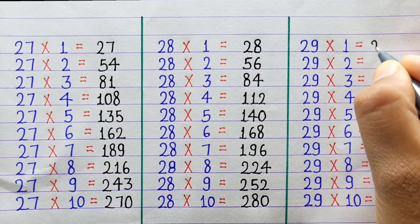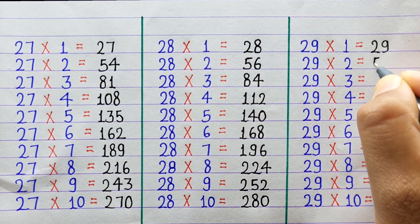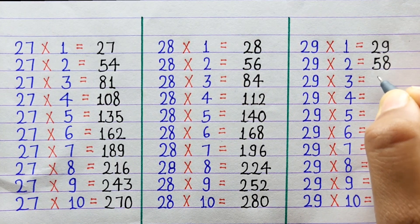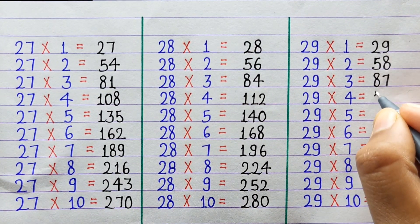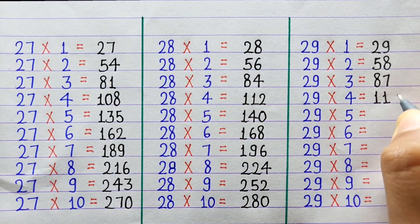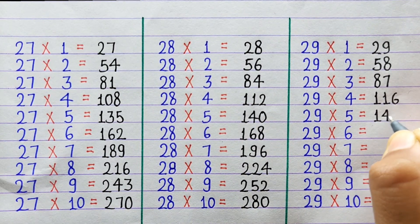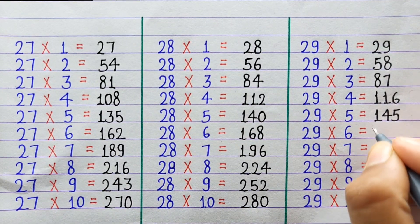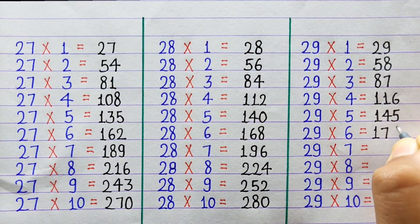29×1=29, 29×2=58, 29×3=87, 29×4=116, 29×5=145, 29×6=174.